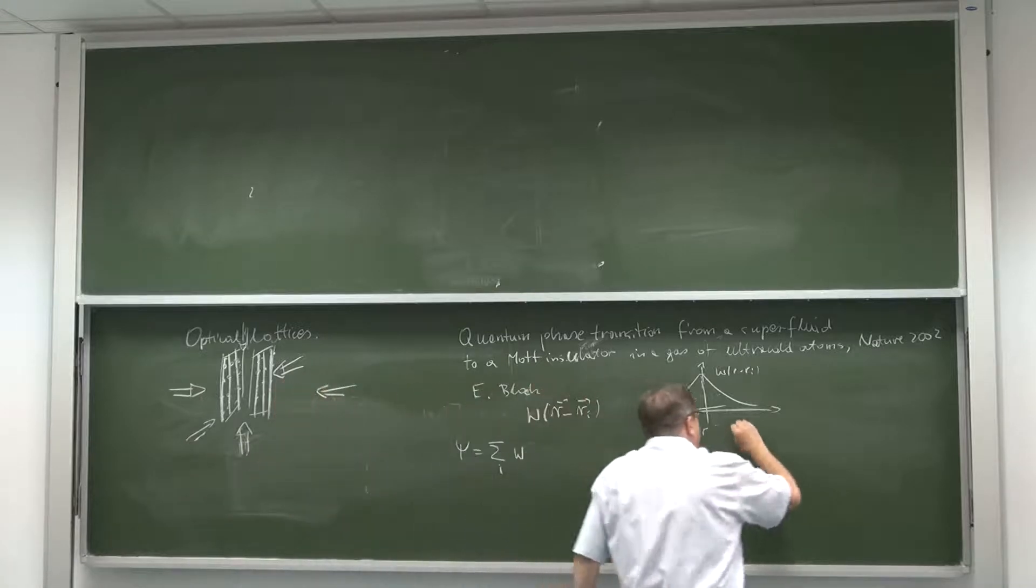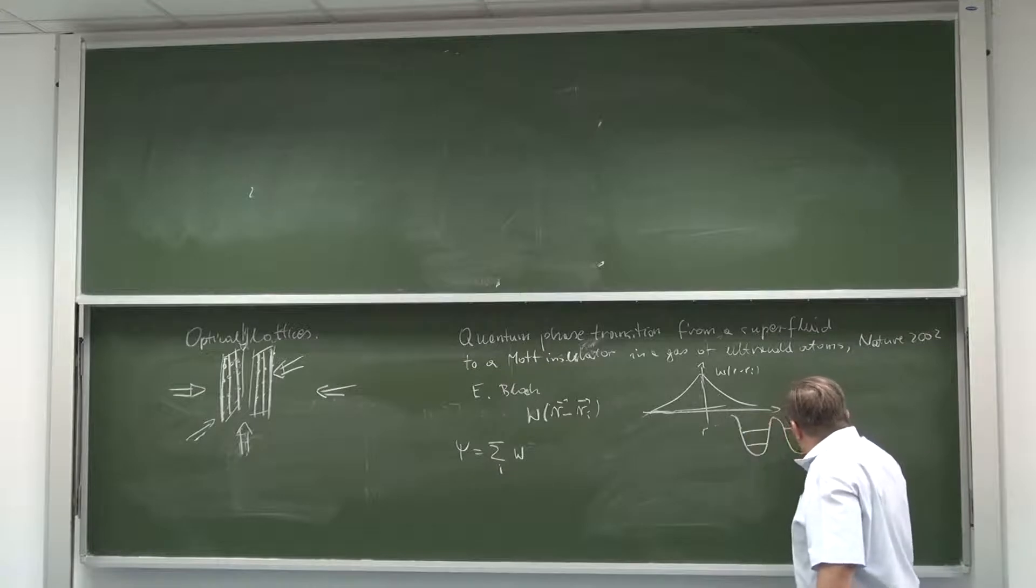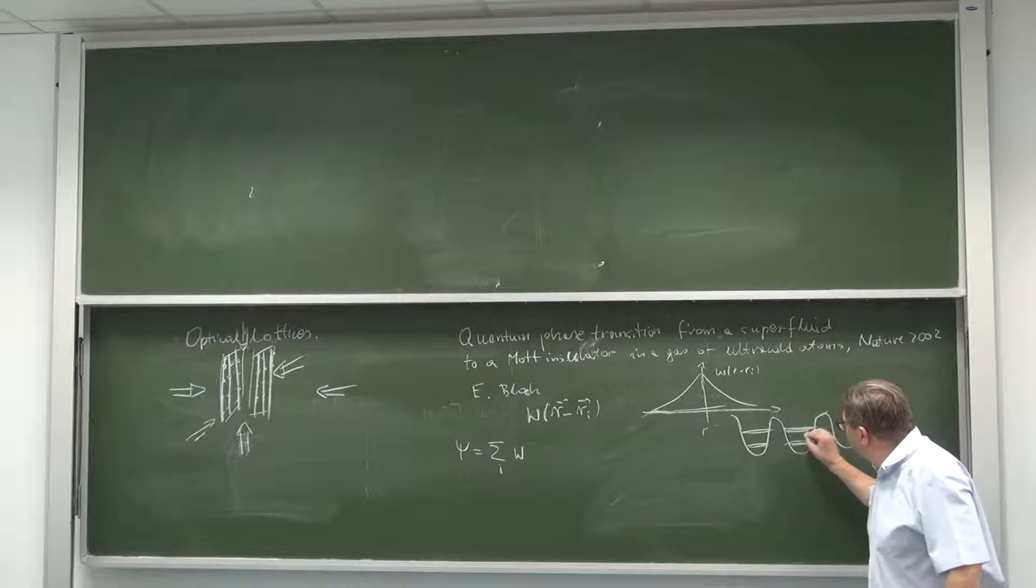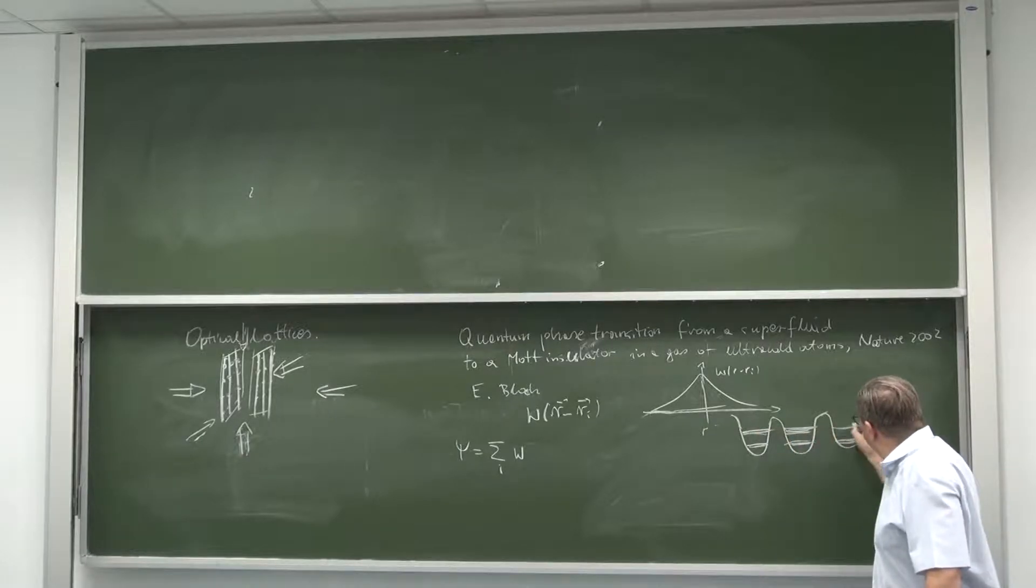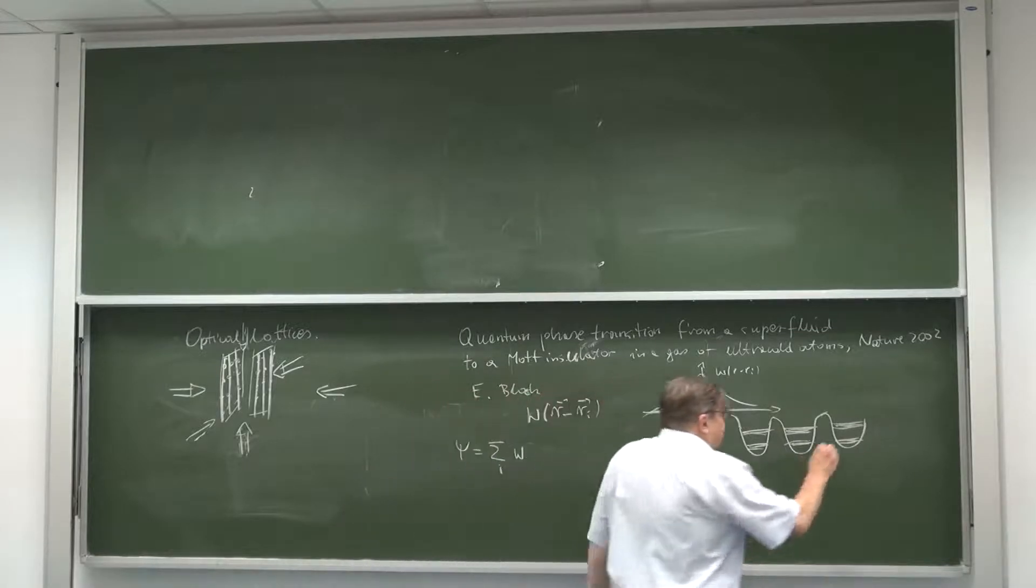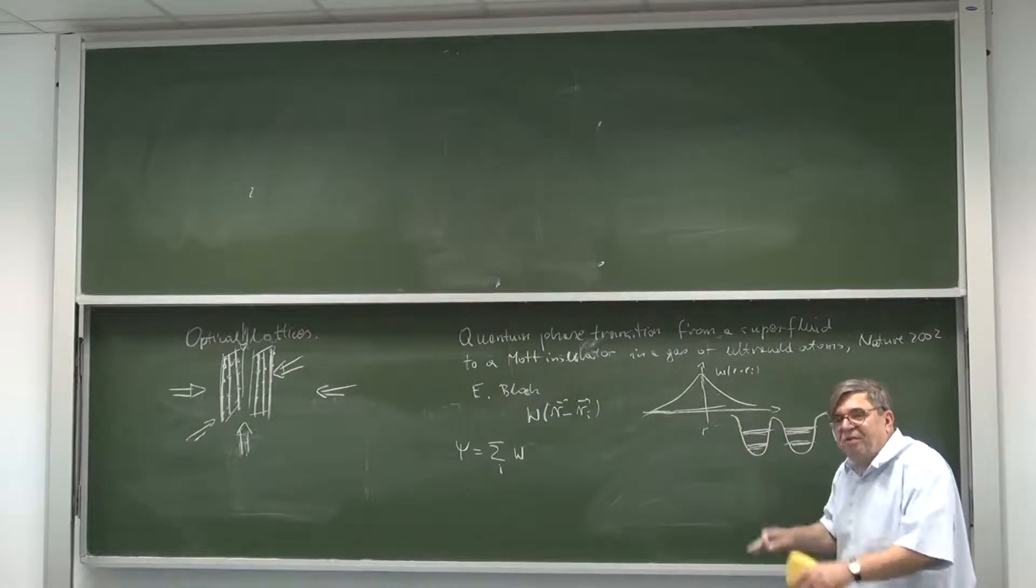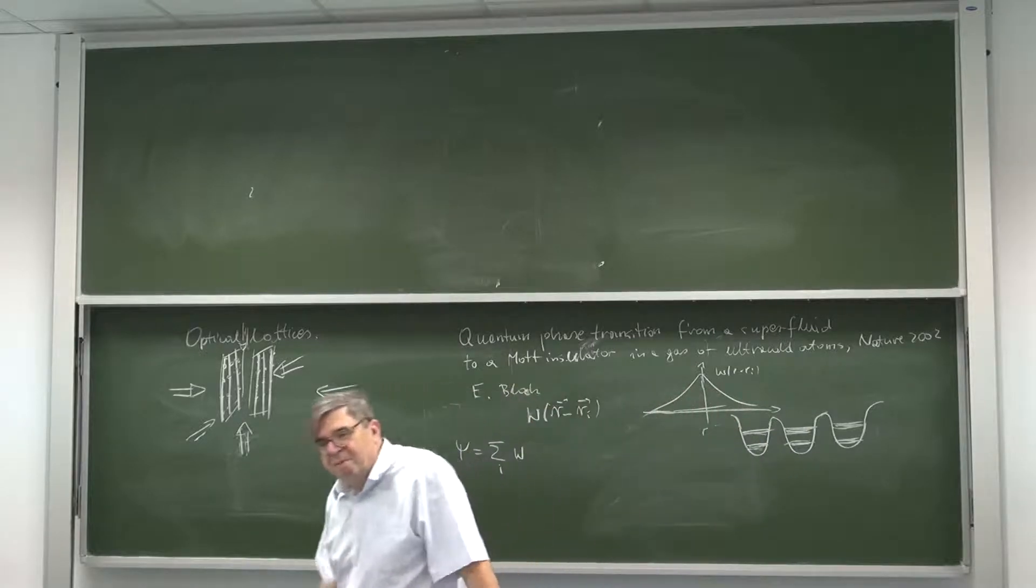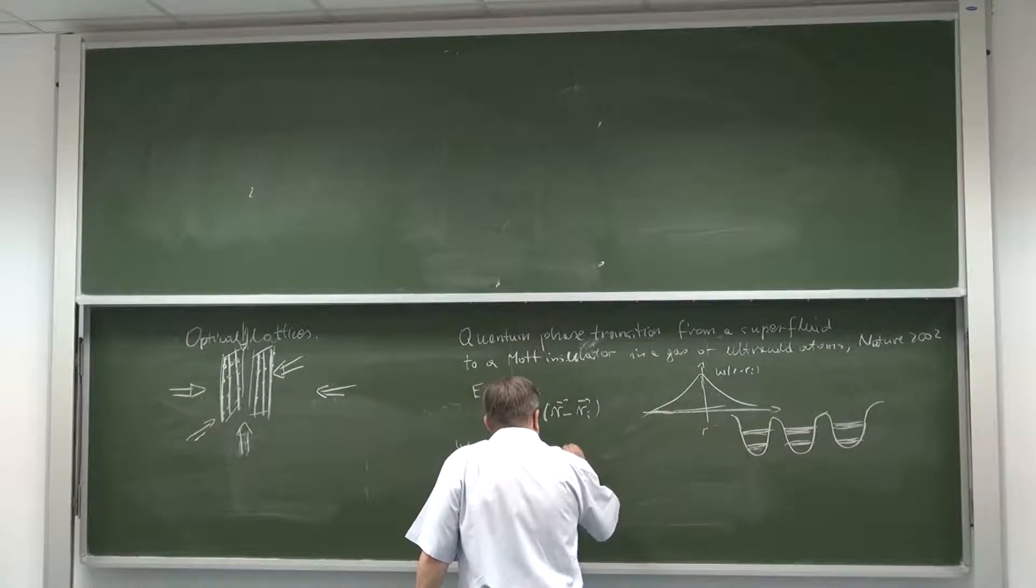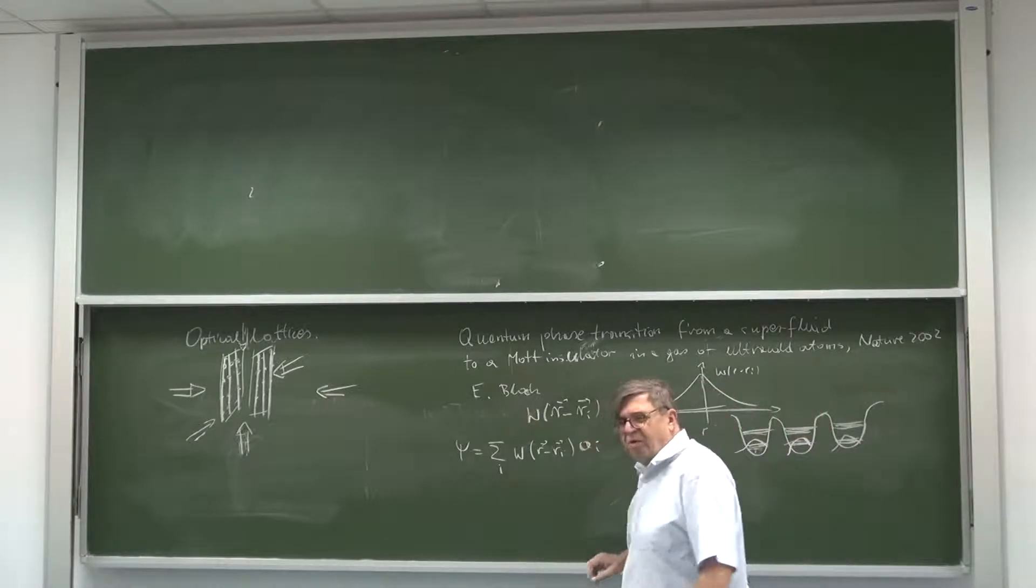Sometimes people try to approximate it by Gaussian but it definitely takes exponential tails. So these are the Wannier functions, and then the field operator for bosons can be expanded in these bases. When we have one site we have discrete energy levels. When we have two, these levels are split into two. If we have many, there will be positional splitting and so on, finally you get into the concept of bands.